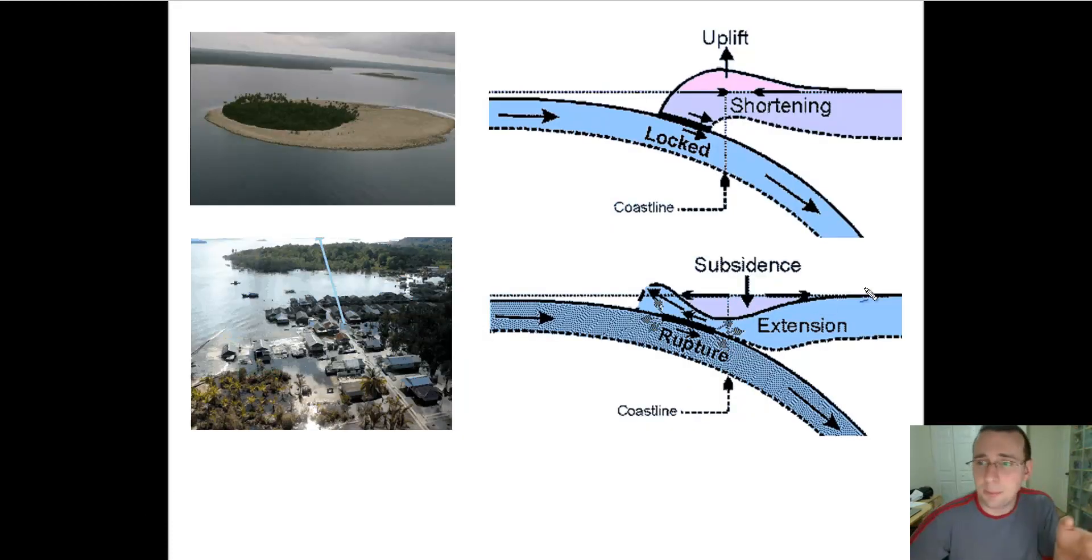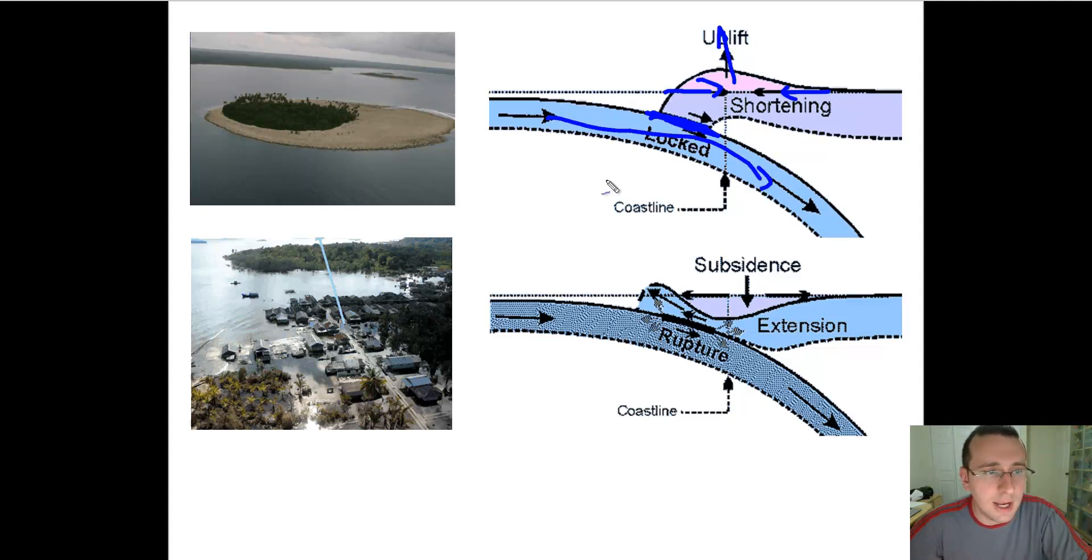An example in subduction zones is the same thing will happen. If you have a plate that's going underneath another plate, because there's friction between the two plates, it may become locked, which causes the compression or shortening of the plate that's above it, and this plate will be uplifted, causing like a slight little mountain. You see here, for example, this island was originally under water, and only this part was above where you have the plants, but because of an uplift event, this whole section got bent upwards, exposing some other island that used to be under water.